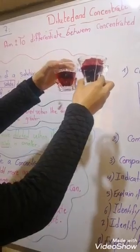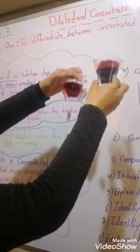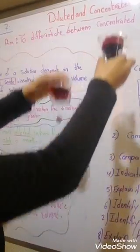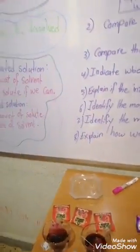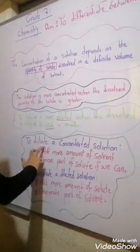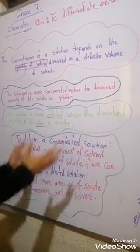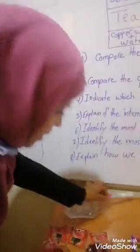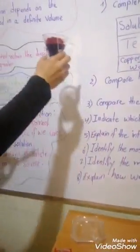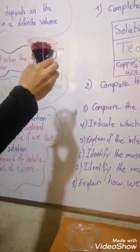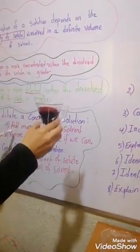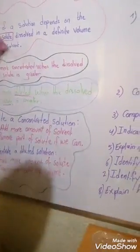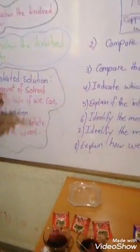Depending on the amount of solute added, we differentiate between diluted and concentrated solutions. In order to dilute a concentrated solution, if we want to dilute it, we must add more solvent.